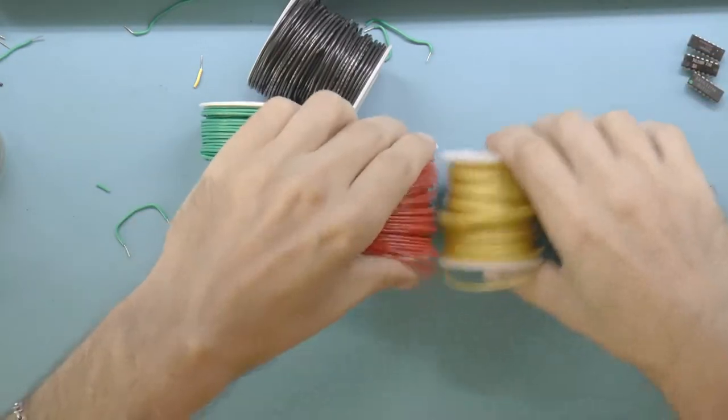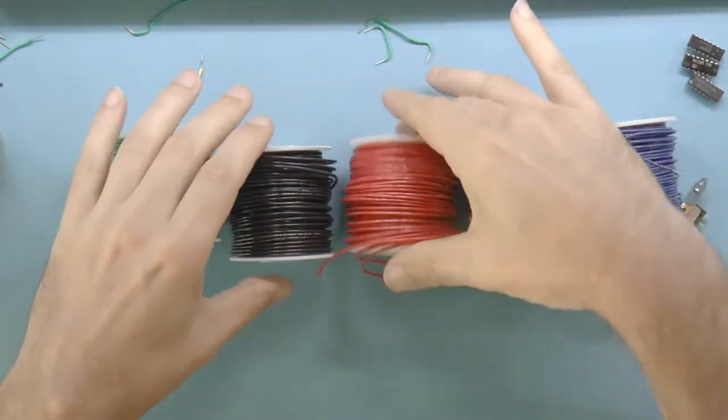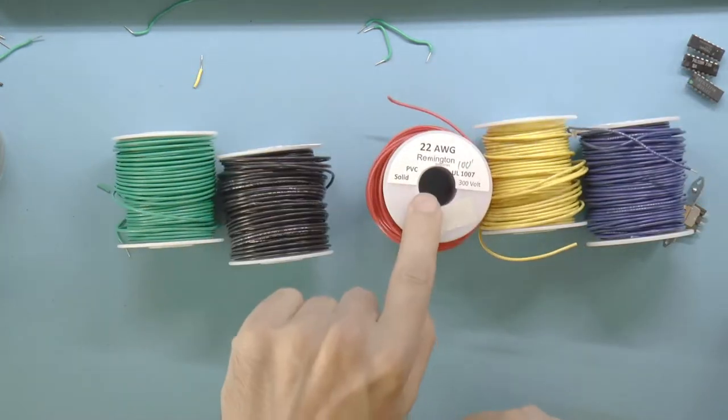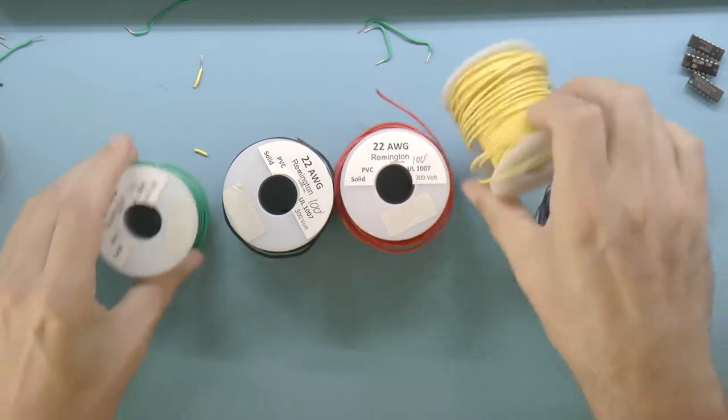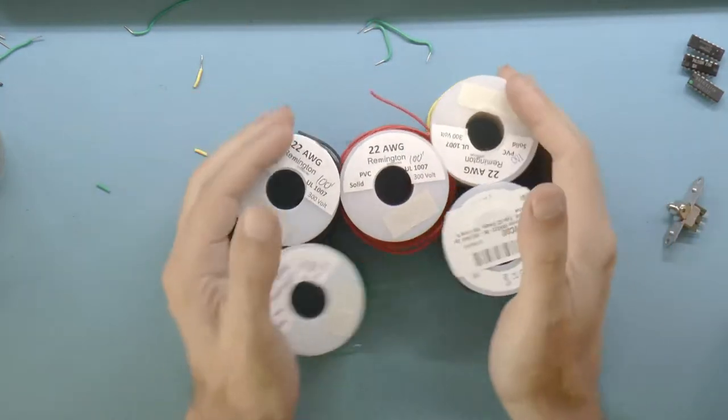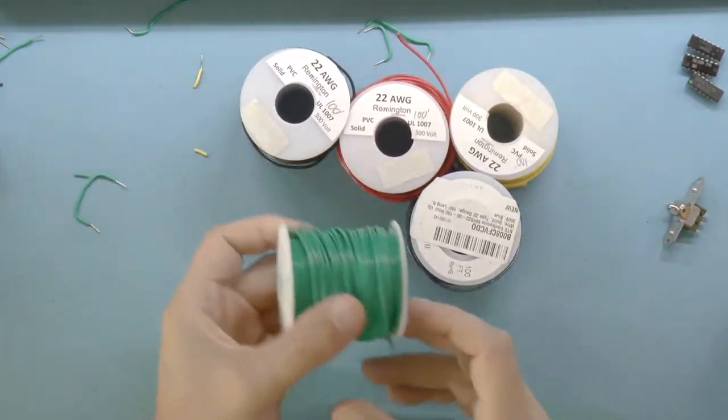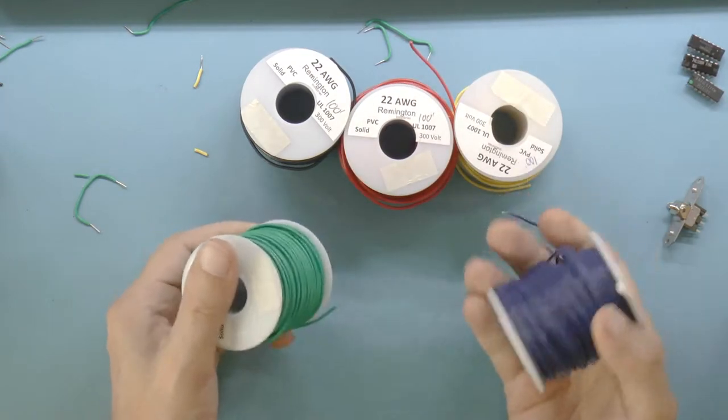These are all the different wires that I use for my breadboard. They're all the same size, they're all 22 gauge, and I have them in different colors which is nice. So the problem is that now I need to cut them to length and strip them.